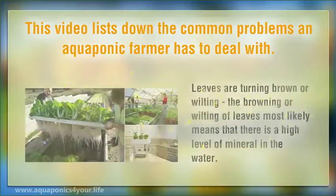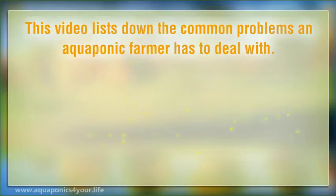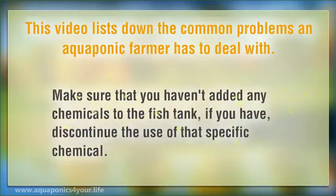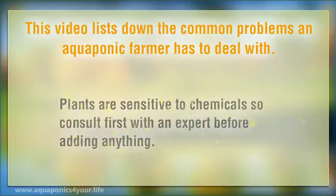Leaves are turning brown or wilting. The browning or wilting of leaves most likely means that there is a high level of minerals in the water. Make sure that you haven't added any chemicals to the fish tank. If you have, discontinue the use of that specific chemical. Plants are sensitive to chemicals, so consult first with an expert before adding anything.